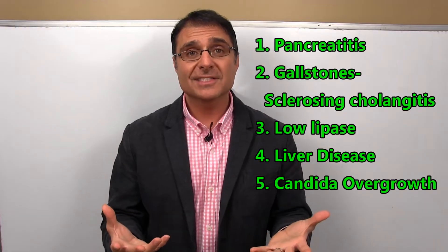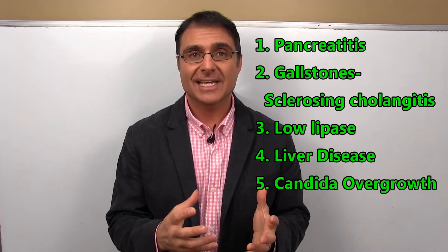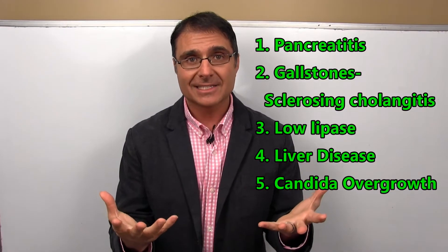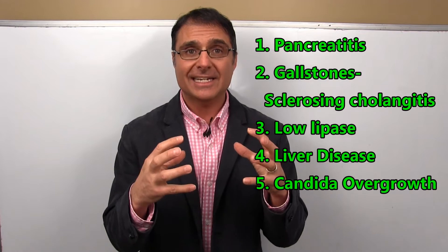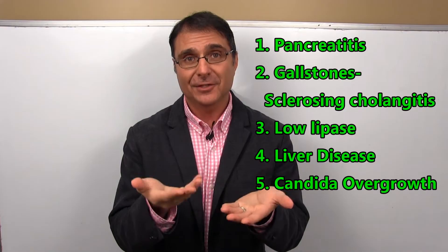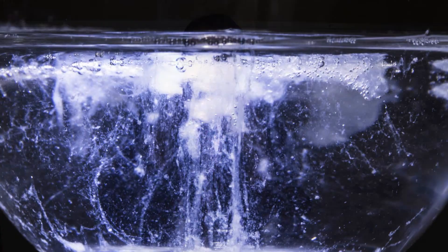Number five is candida overgrowth in the large bowel. When you have too much candida, it ferments your carbohydrates, and fermentation forms gas that gets trapped in the stool, making it float. Easy ways to check for candida: is your tongue white? If you stick your tongue out and have a white coating, that could be an indication. You can also do a spit test in the morning into a glass of water — if it floats but then makes tentacles, that can indicate candida.